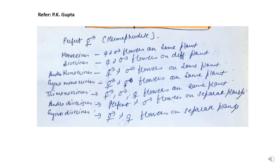Androdioecius plants are those where perfect and male flowers are present on separate plants. Gynodioecious plants are those where perfect or hermaphrodite flowers and female flowers are on separate plants. These are the different kinds of flowers found on plants and the categories by which they are classified.